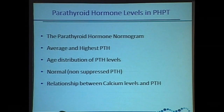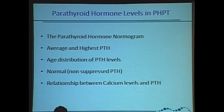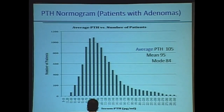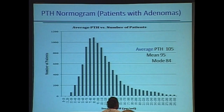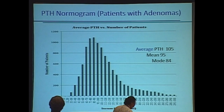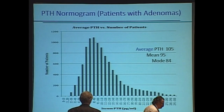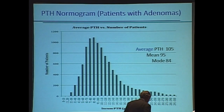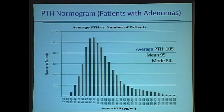Let's look at parathyroid hormone levels in these patients. The parathyroid hormone normogram is a Gaussian distribution with an obvious skew to the left. The average parathyroid hormone level in our 10,000 patients in this database is 105. The mean is 95, the mode is 84 — in other words, the number we see most often is 84.